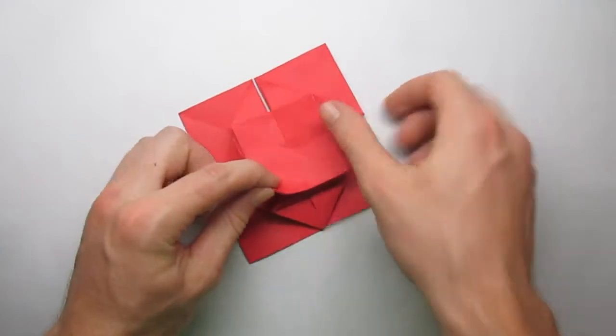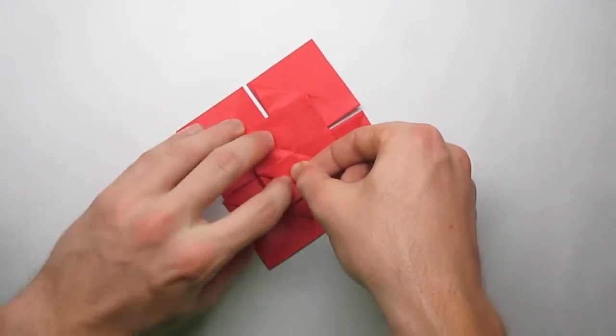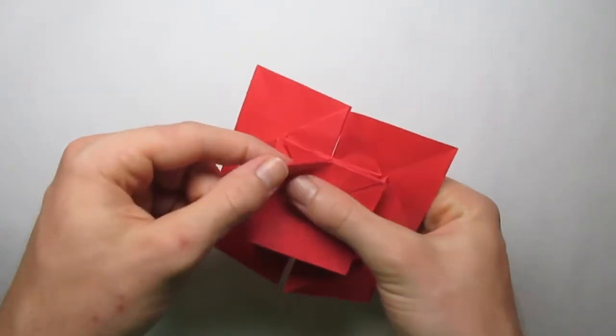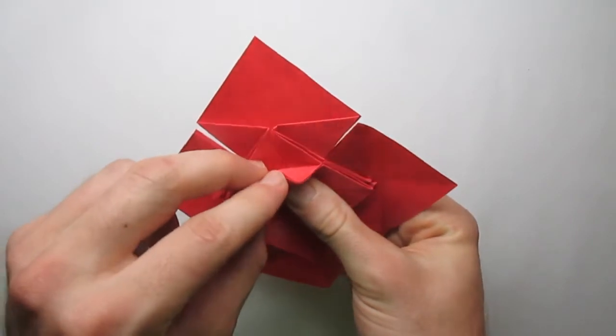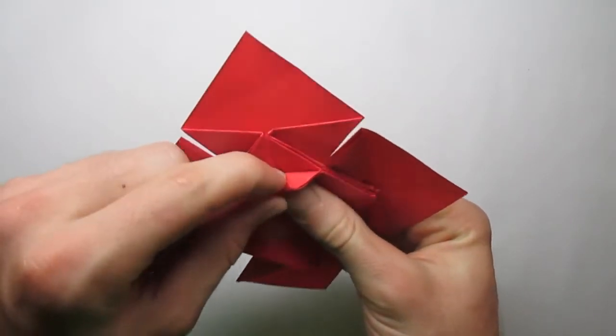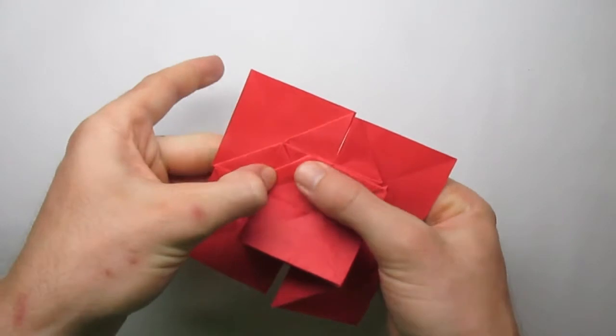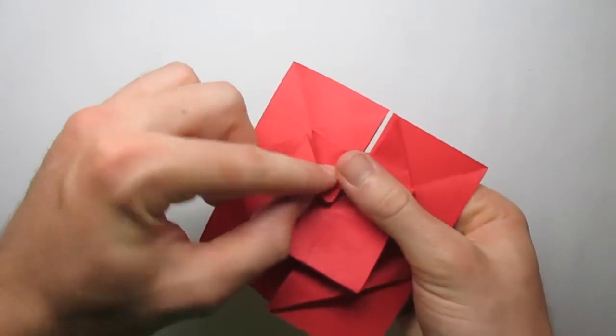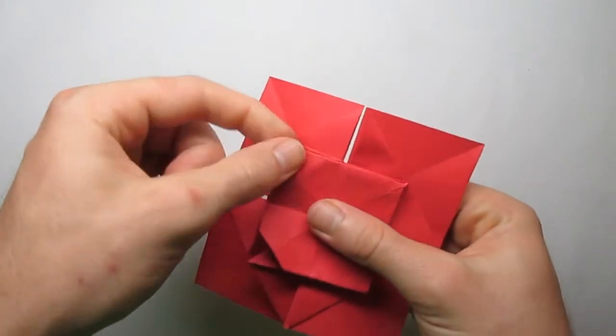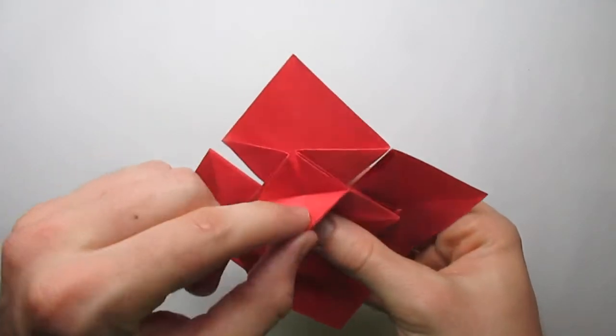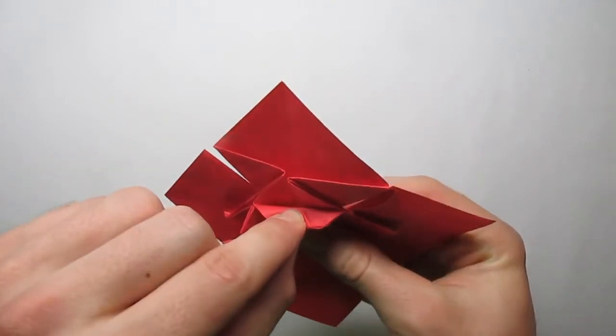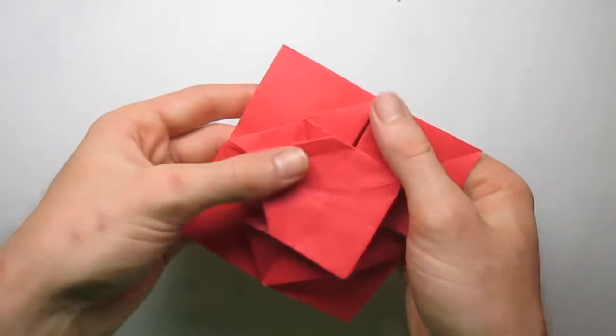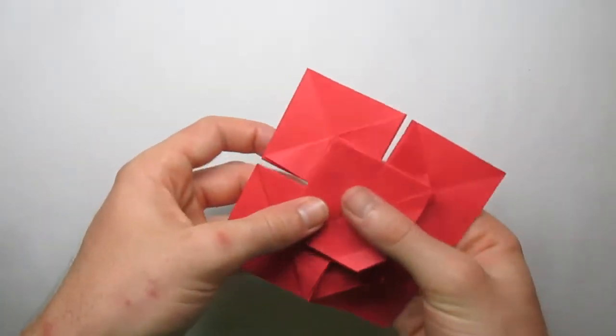Take these points and bring them into the center and just make a little mark. Fold. And then you're going to mountain fold to that mark. Like that. So just mark fold and mountain fold. Let's do that on all four corners.